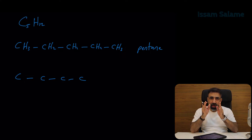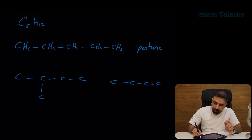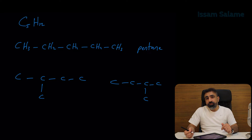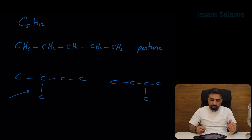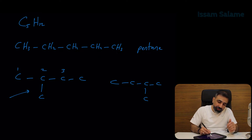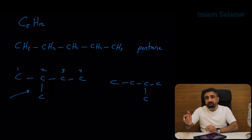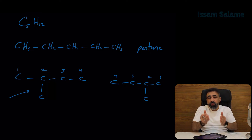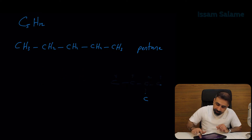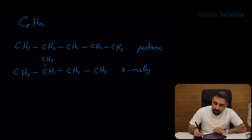We have to add the fifth carbon to the central carbons. We have two possible cases: either we add it here or here, but in both cases they are the same structure. In the first case it's called 2-methylbutane, counting from the left carbon. In the other structure, since the substituent is closer to the right, we count from the right — so it's also called 2-methylbutane. We end up with only one possible case, drawn like this: 2-methylbutane.